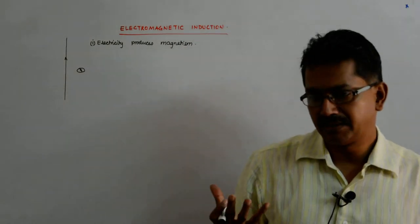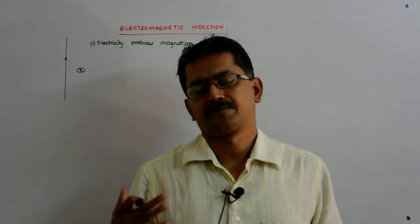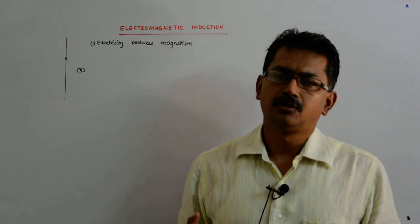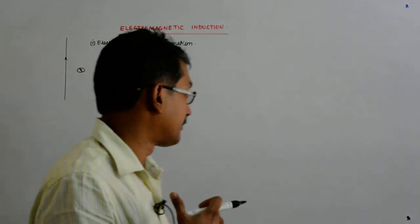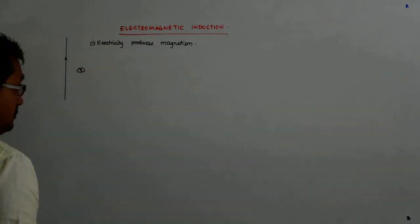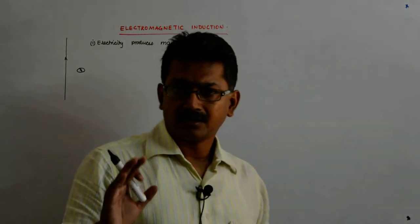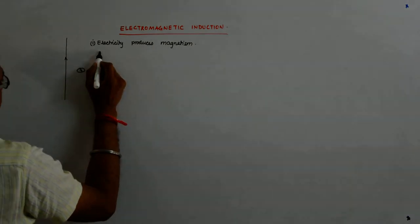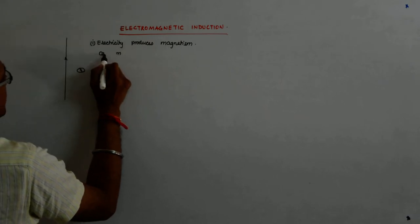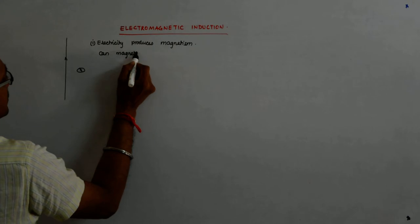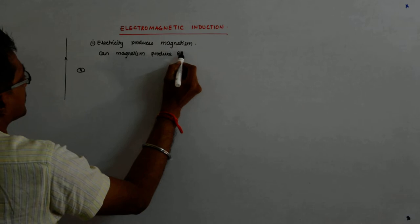So this was fine: electricity produces magnetism. Now, nature is pretty dual in its character. We'll study light and we'll see the dual character of light, and in so many other ways also. So electricity produces magnetism — that was fine with the world. The question came up: does magnetism produce electricity? Can magnetism produce electricity?